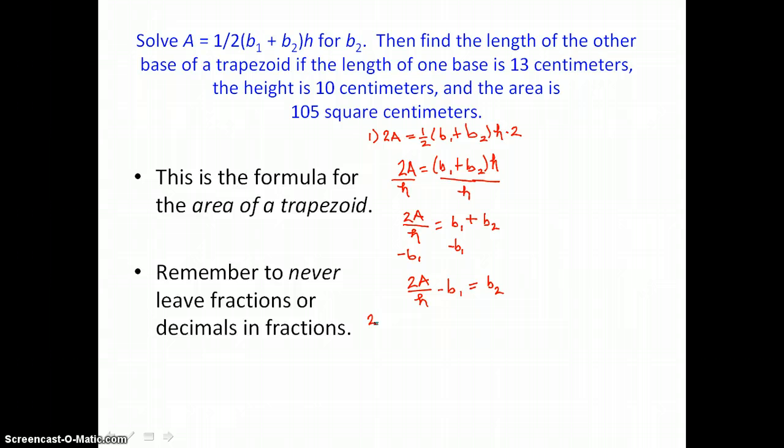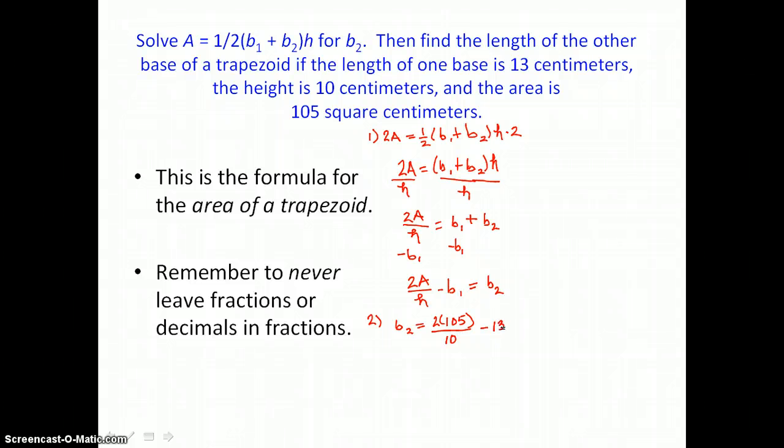Now in the second part of this problem, we're going to use our new form of the equation, and we're going to solve for one of the bases by substituting in 105 for the area of this trapezoid. In for h, we're going to substitute a height of 10, 10 centimeters, and we're going to subtract the length of one of the bases, 13. So simplifying on the right,